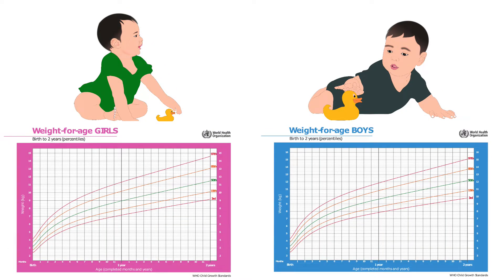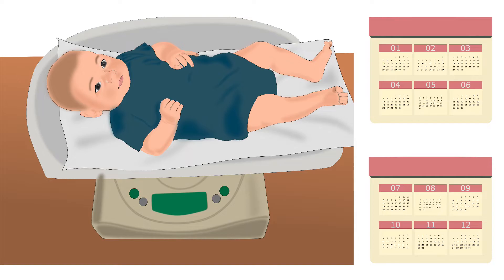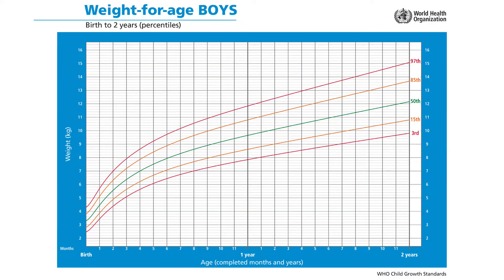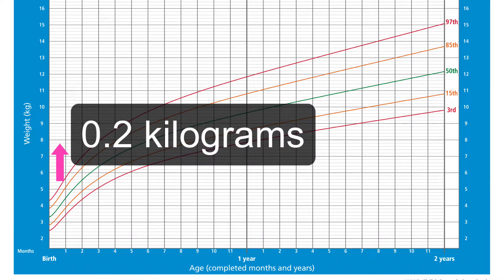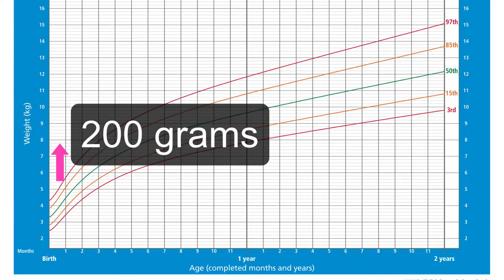Now let's learn more about the second type of percentile growth chart — the Weight for Age Growth Chart. Weight for Age reflects body weight according to the child's age. On Weight for Age charts, the Y-axis shows weight in kilograms, and the horizontal lines represent an increase in weight by 0.2 kg or 200 grams.